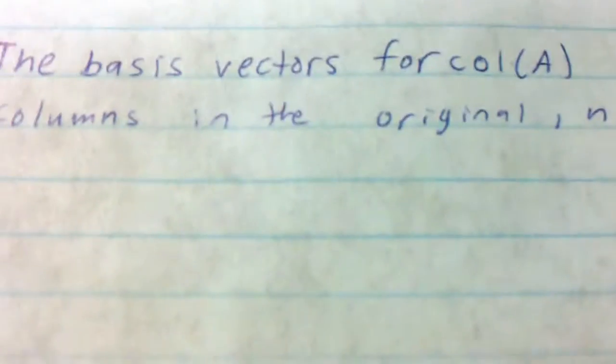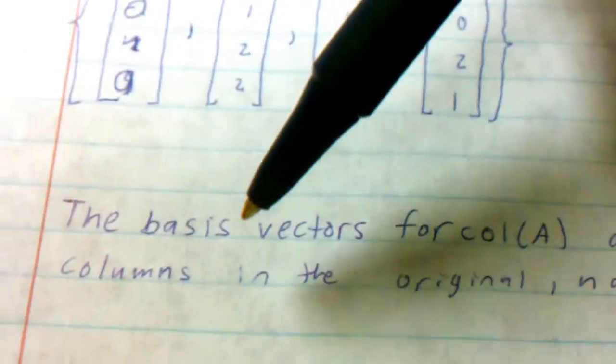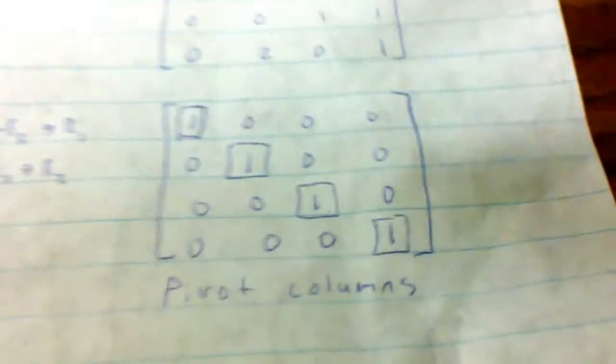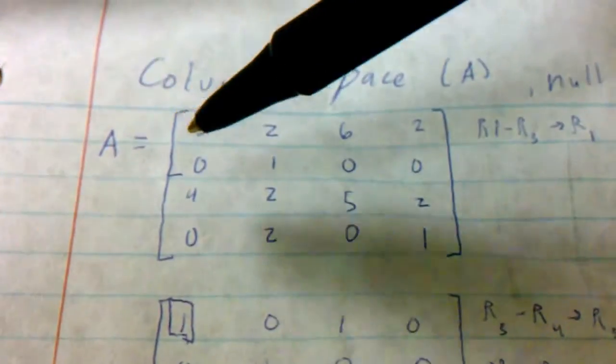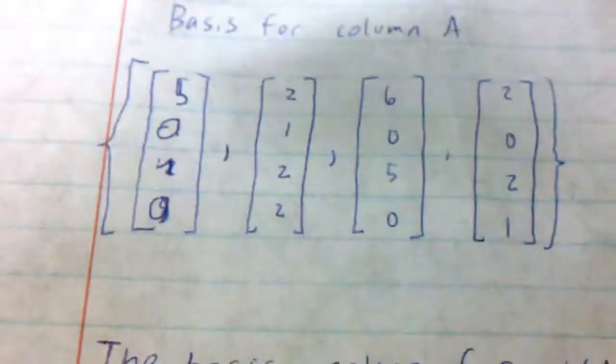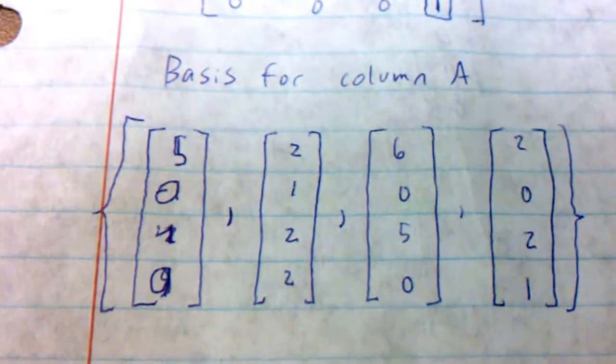So now, as definition said, the basis vectors for column A are the pivotal columns in the original non-row-reduced matrix. Here, these are all pivot columns. So we are going to take every single column and use that for our basis in column A. So, that's it.